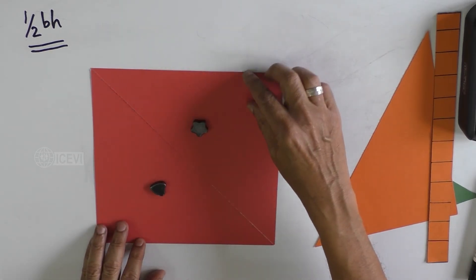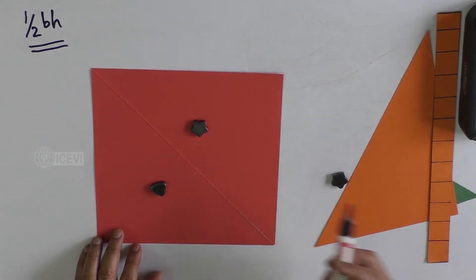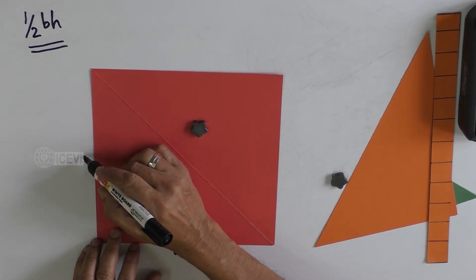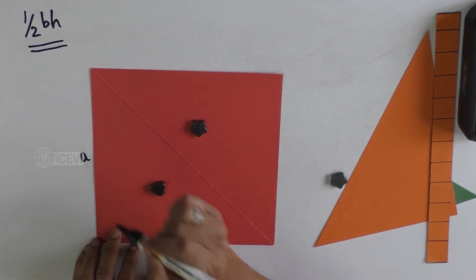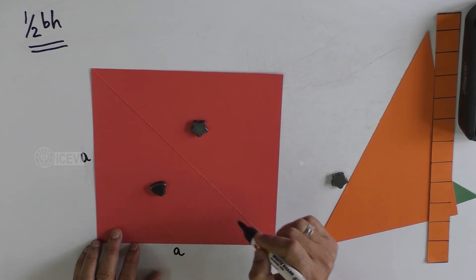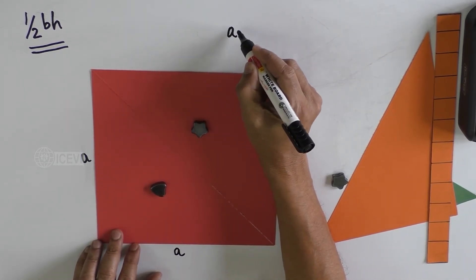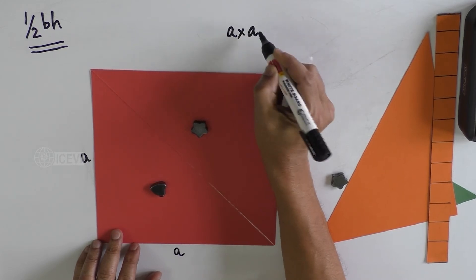What is the area in the case of the square? If you assume that the base is A and the height is also A because all sides are same, then A into A, that is A square.